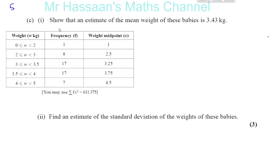We're going to show that an estimate of the mean weight of the babies is 3.43. The total number was 50. To find the estimate of the mean weight, we know that there's one baby between 1 and 2 kilograms. We don't know exactly what weight that baby was, so we take the halfway value — that's what they've done here. They've given us the midpoints of each of these classes, which helps us answer this question.